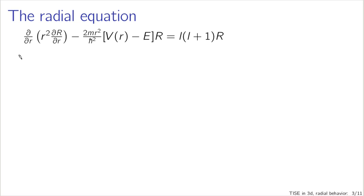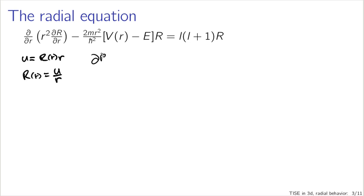We can simplify this equation by rewriting it in terms of a new function u, given by capital R of r multiplied by r. Put another way, capital R(r) is given by u divided by r. So u is a function of r, and if we make these substitutions in the original equation, the form simplifies slightly. For instance, we have terms like the partial derivative of capital R with respect to r. If I write this in terms of u, it's the partial derivative with respect to r of u over r — and this doesn't look simpler yet, but you'll see what happens in a moment.